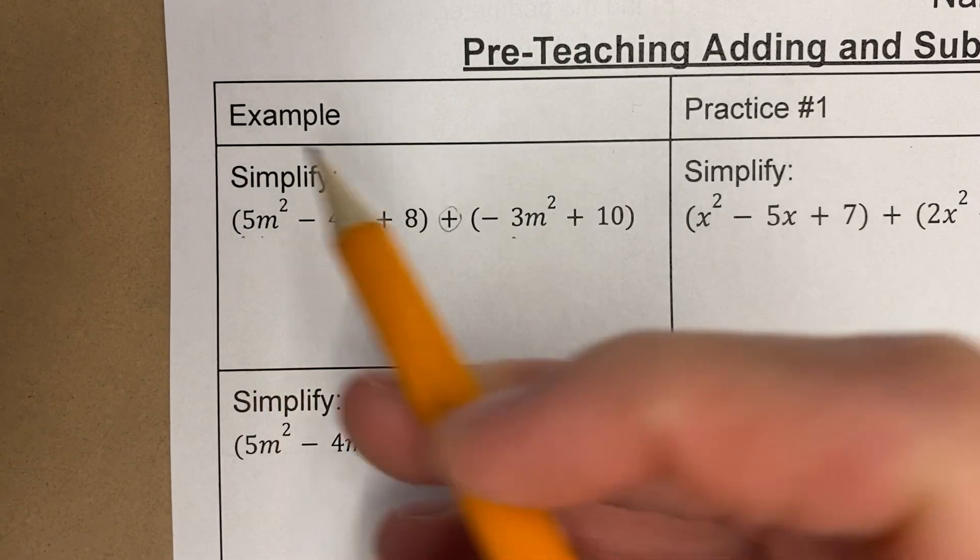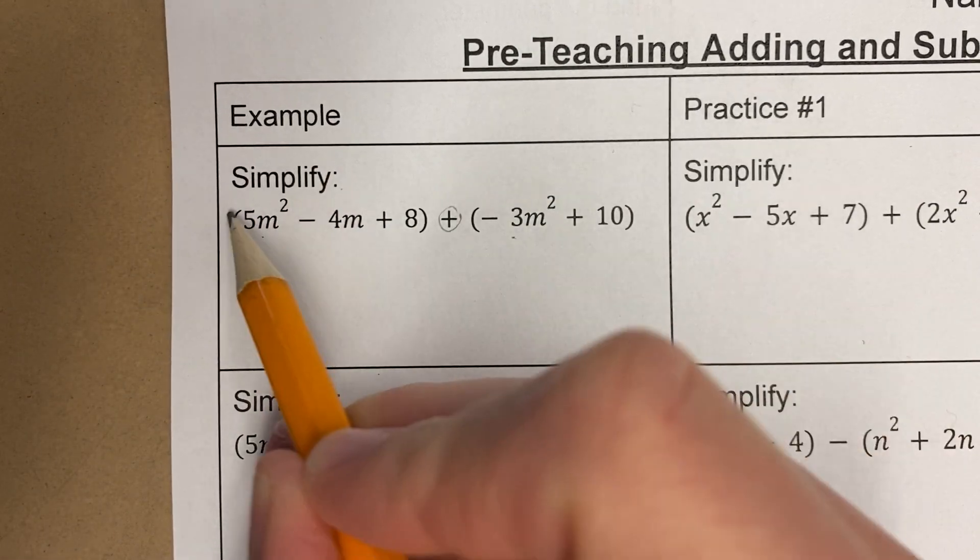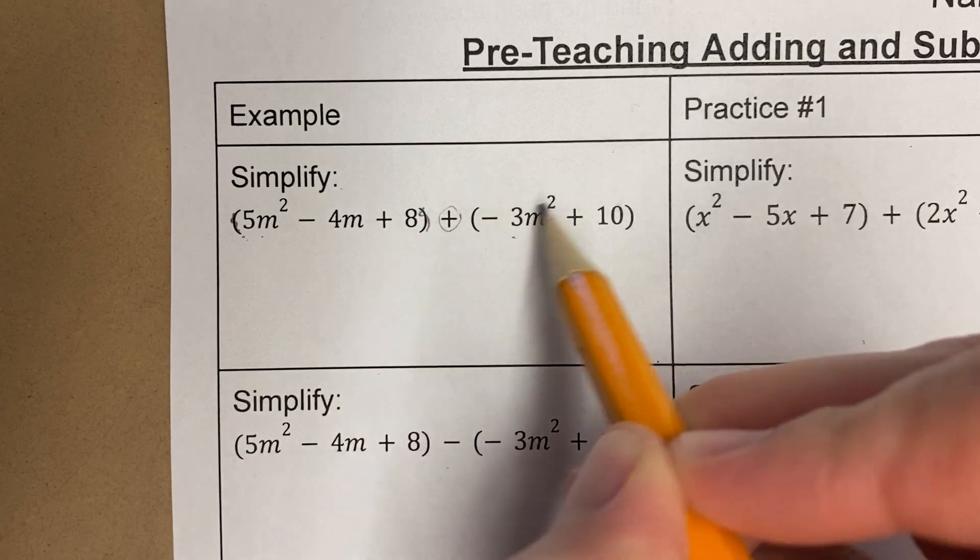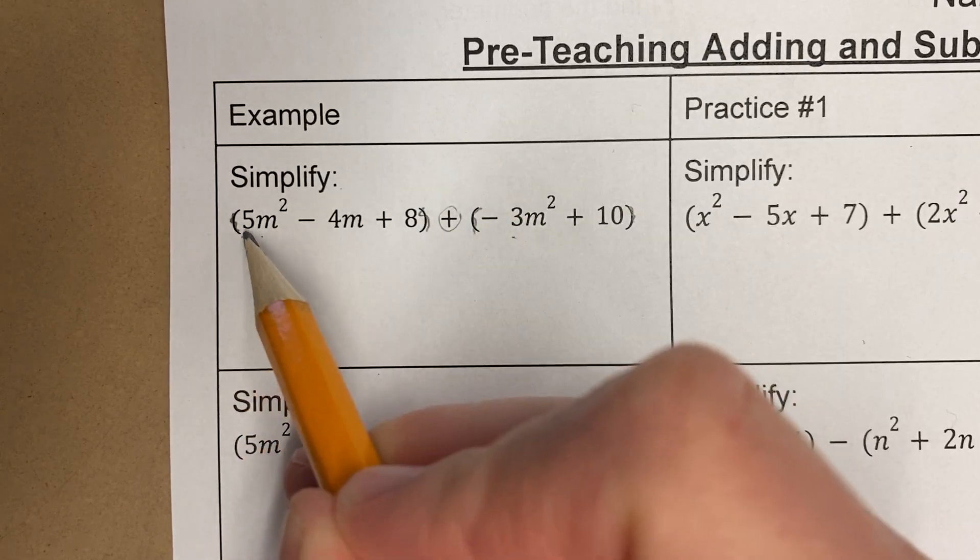So these parentheses don't mean anything. I'm going to just go ahead and ignore them. I can even kind of scribble them out. And I'm going to go ahead and combine my like terms.